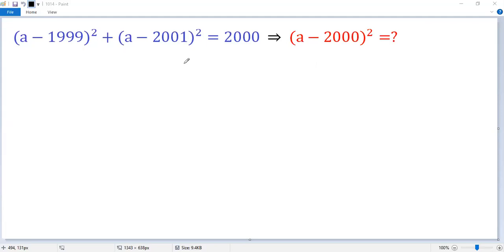To solve this nice problem, let's make a connection between the given condition and the conclusion. We know the target is a minus 2000 squared, right?